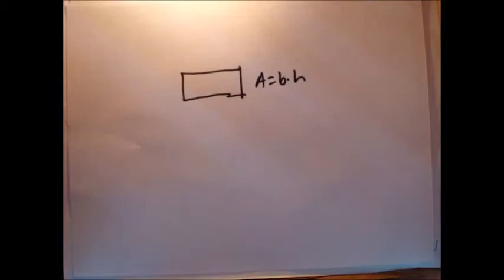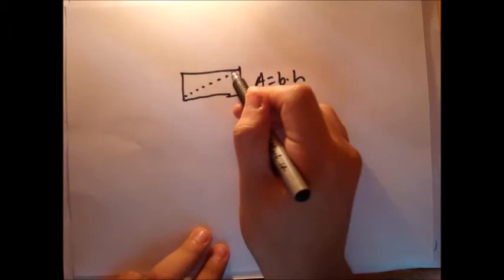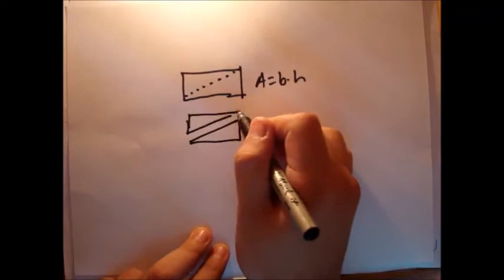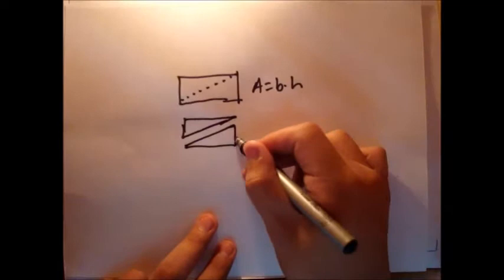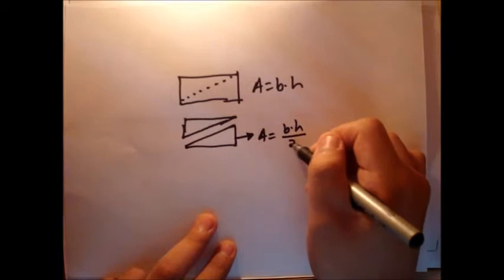So if you cut it in half through its diagonal, you get two equal area pieces — they look like triangles. There are three sides, so they are triangles. Because you divide it into two equal pieces, it's a division of two. So the new area of each individual piece is base times height divided by two, or one-half times base times height.